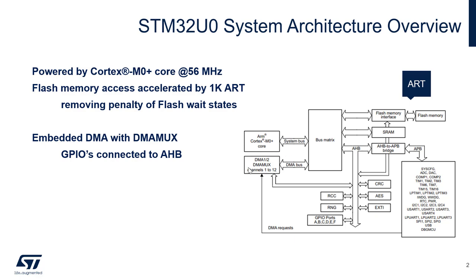We also have another master on this bus matrix: the DMA — DMA1 and DMA2. We use DMA MUX for this, so very flexible DMAs used in this STM32 U0. In terms of slaves, we have the flash memory, which has a flash interface — we call it the ART, our flash accelerator. It's basically a 1K instruction cache that is available.